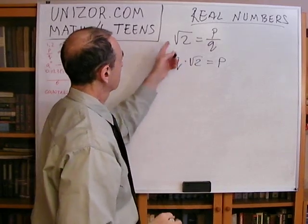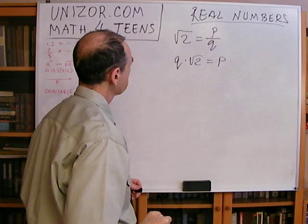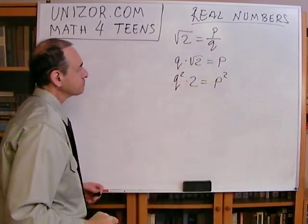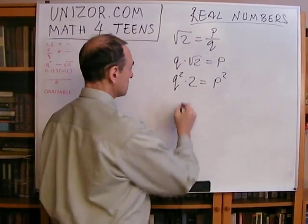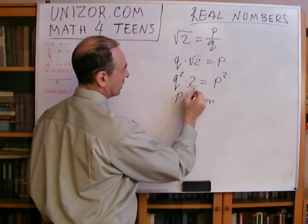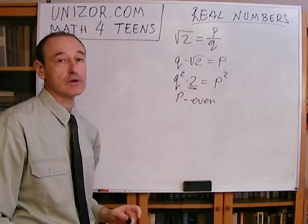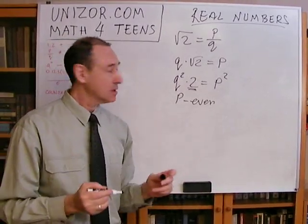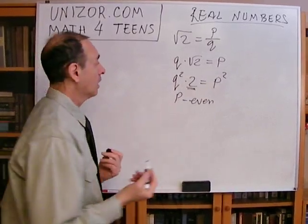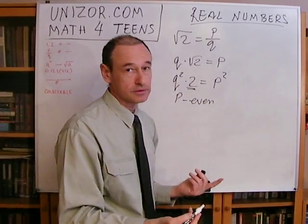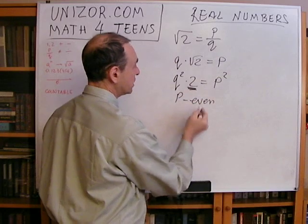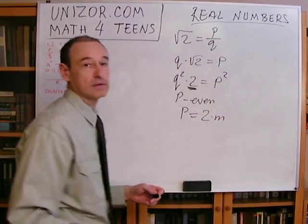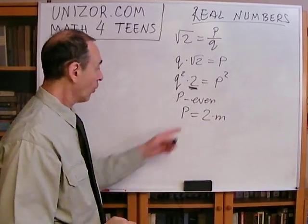Now let's square this whole thing: q squared times two equals p squared. What does it mean? It means p squared is even — it's divisible by two. These are all integer numbers. p and q are integers, and the fraction is irreducible. Since p squared is even, then p is even — because if p were odd, odd times odd would be odd, so we cannot get an even p squared if p is not even. If p is even, it can be represented as two times some integer n. So p squared equals 4n squared.